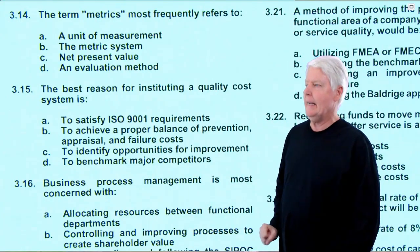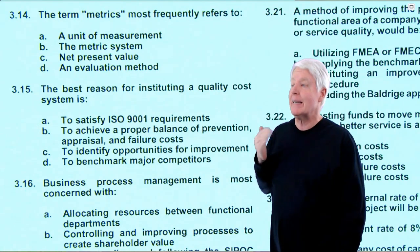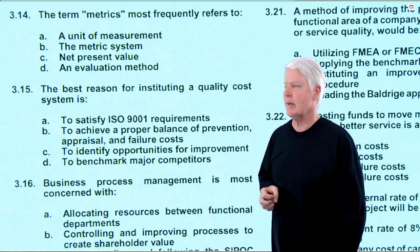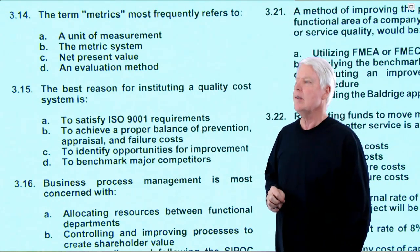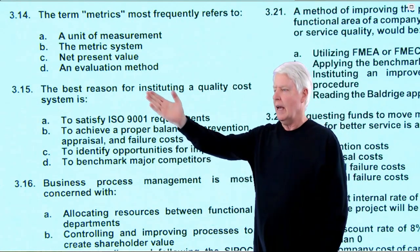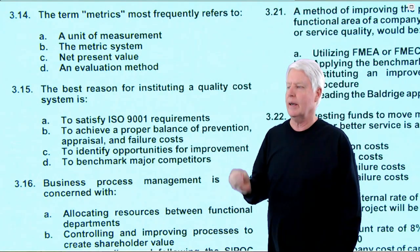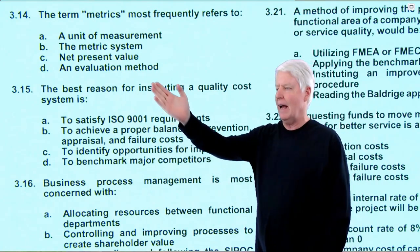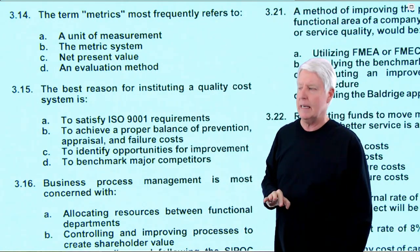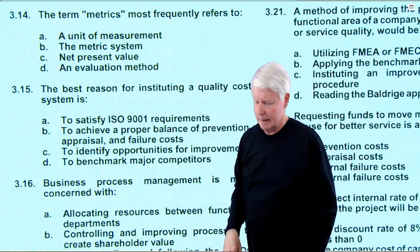Question 14: the term metrics most frequently refers to what? A unit of measurement is possible. The metric system — no. Net present value — doesn't align. An evaluation method — yes: you give people metrics and see if they can reach them. If they do, they're doing well; if they exceed them, great; if not, not good. It is an evaluation method, but D — an evaluation method — best aligns with the intent. The answer is D.